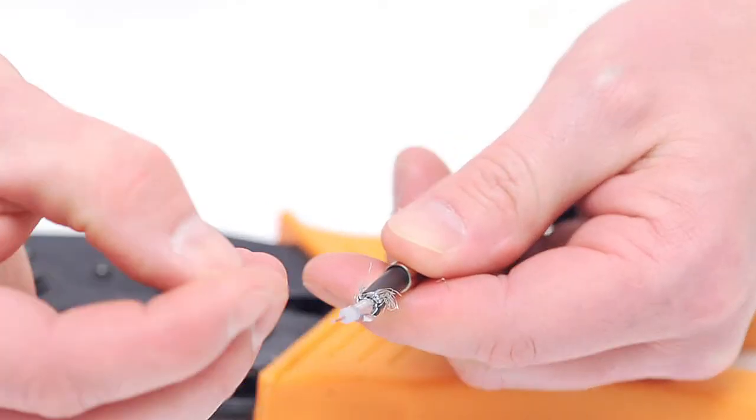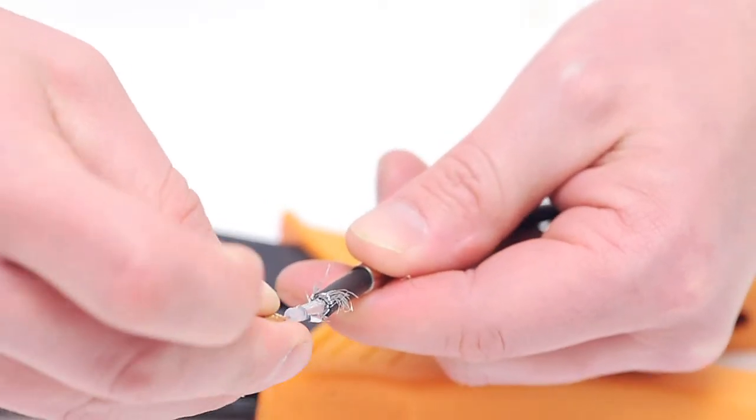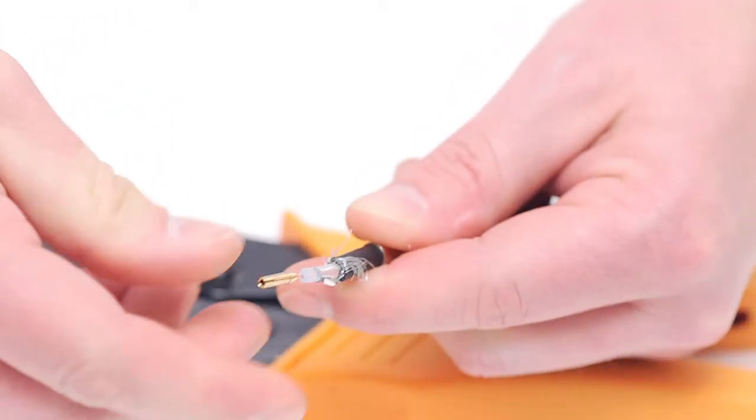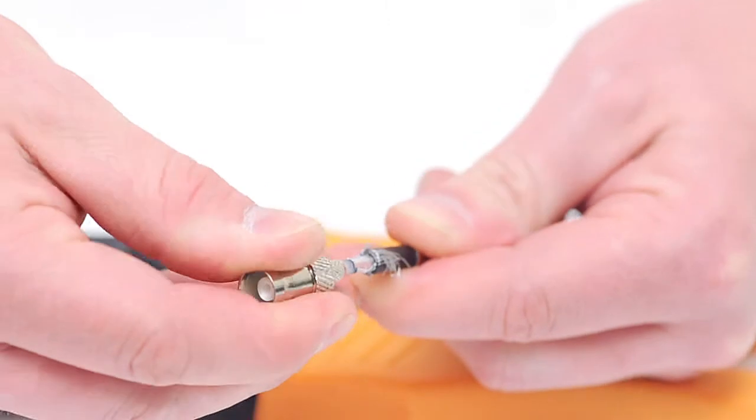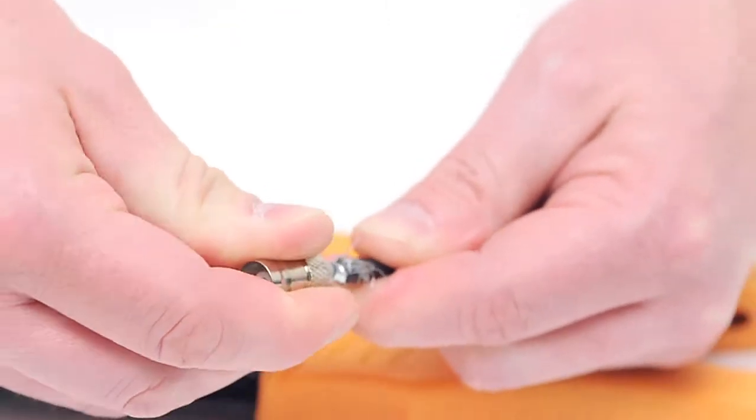Insert the center pin onto the center conductor. Next, take the BNC female connector housing and slide it all the way until it's against the jacket.